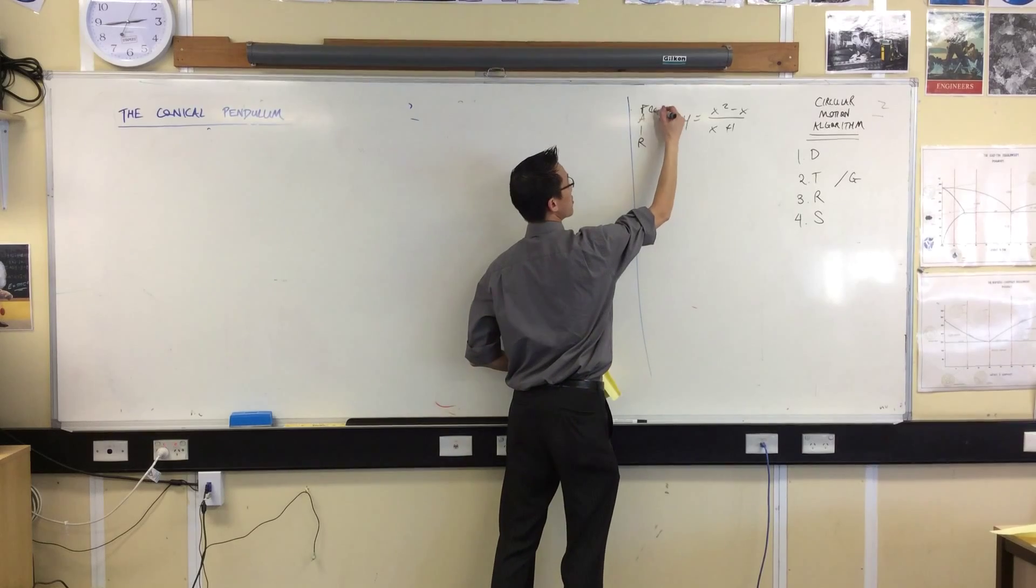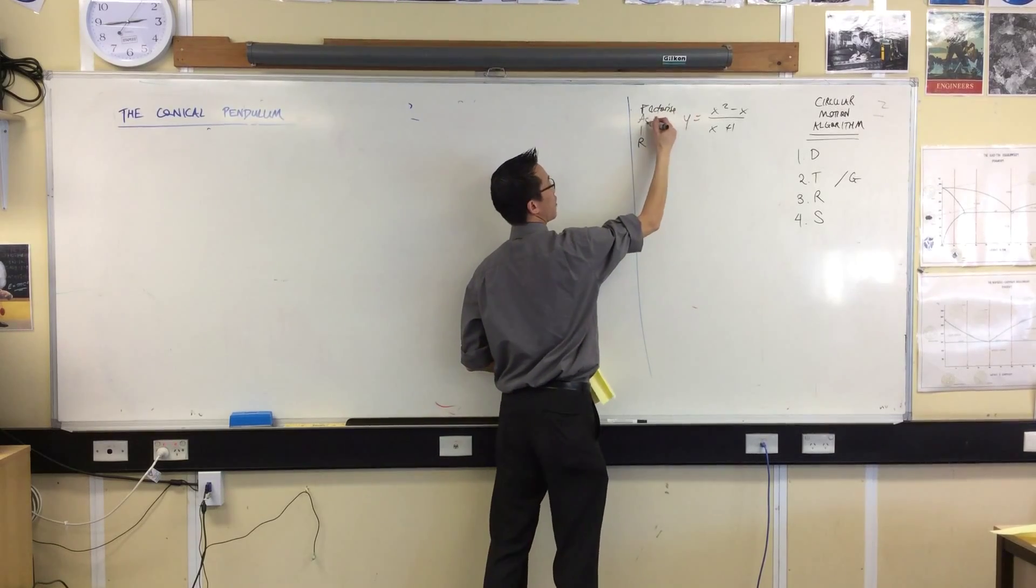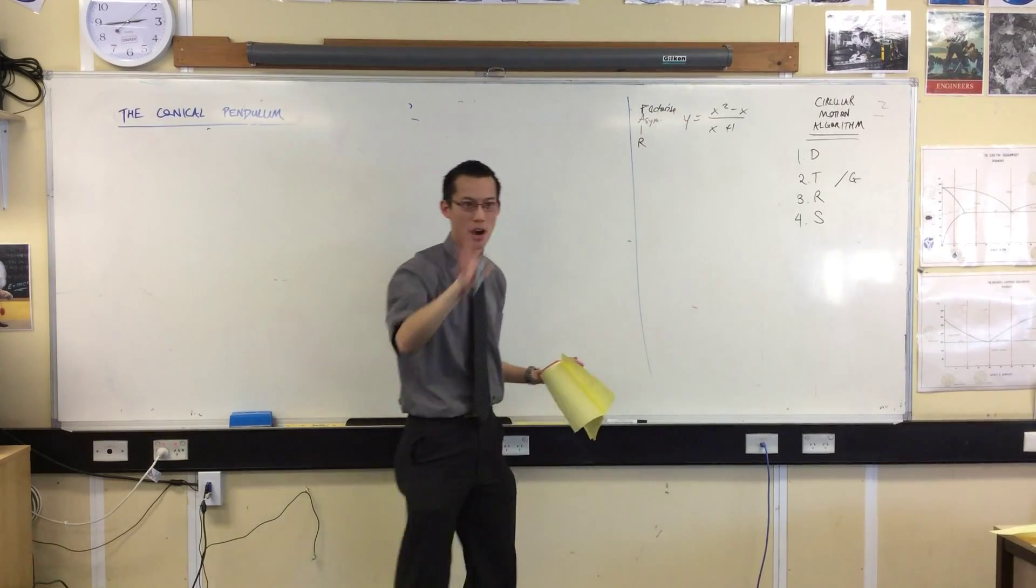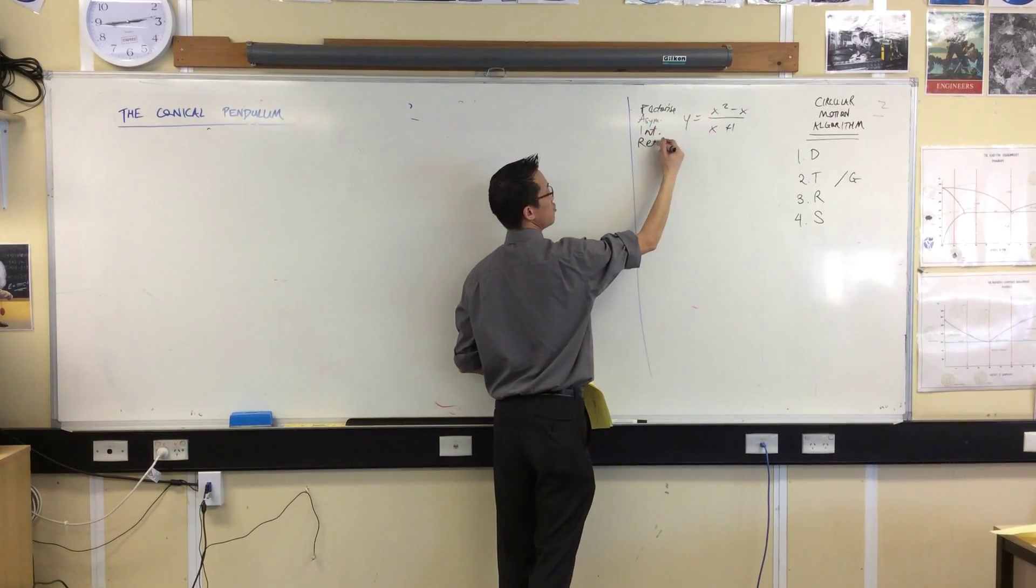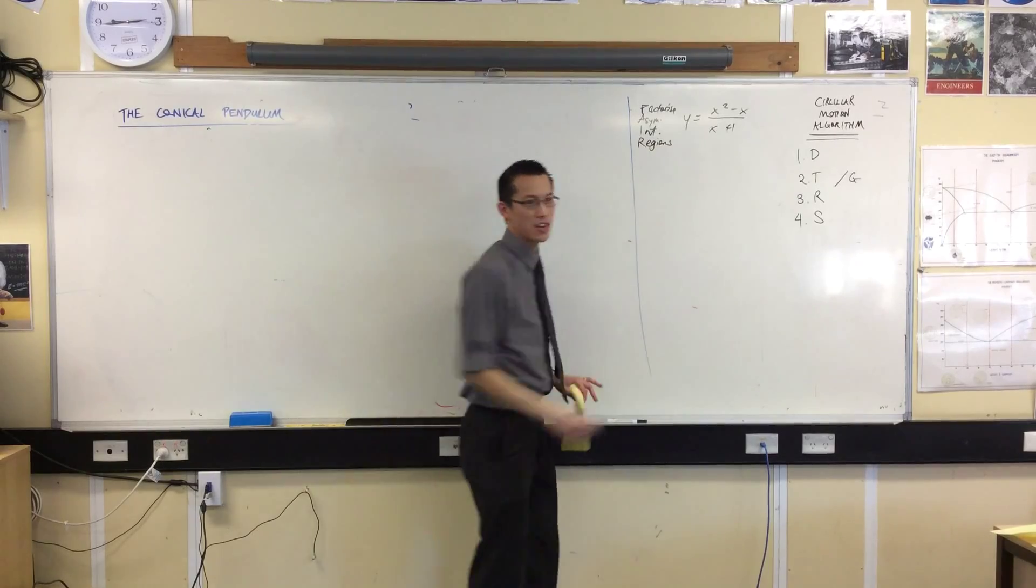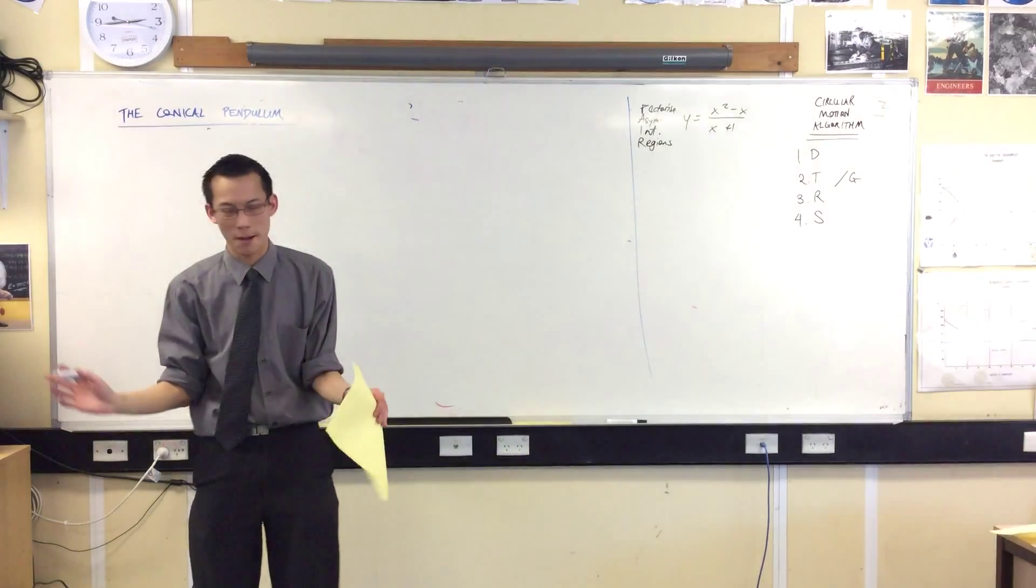You factorize first, then you work out what your asymptotes are, which are just your x and y's, you work that out from the domain and from the extremities, then you work out your intercepts, and then you use the factors to shade your regions and say I'm positive, negative, and so on.